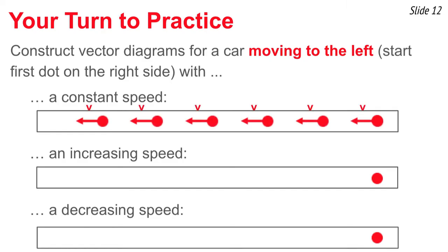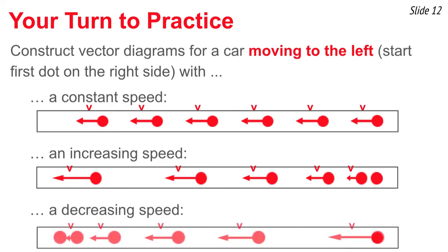Let's see how you did. For a constant speed, you draw the dots equally spaced, draw the arrows to the left since it's moving to the left, and every arrow has the same length — label them V for velocity. For an increasing speed, draw the dots from the right going to the left with increasing spacing; the arrows increase in length as you go from right to left, pointing left. For decreasing speed, the dots get increasingly closer together, the arrows point to the left, and the length of the arrow decreases because the object is slowing down. Hope you did it right.